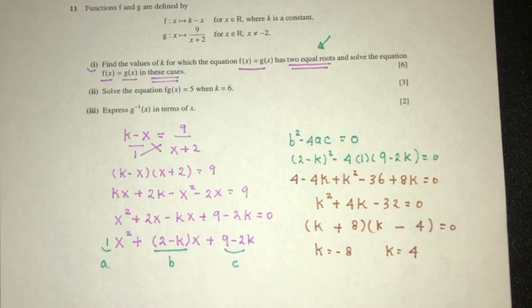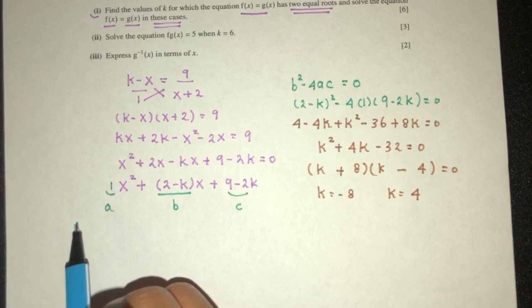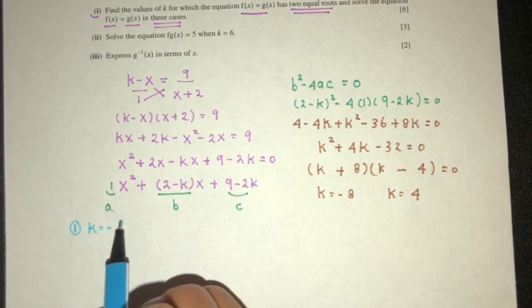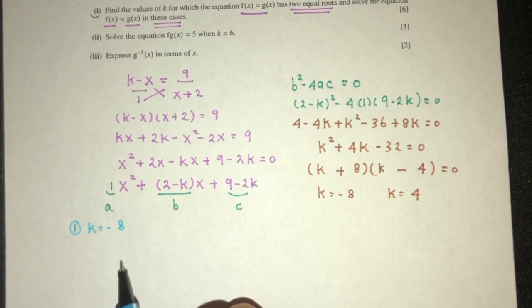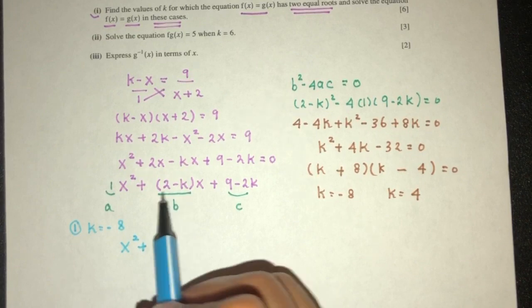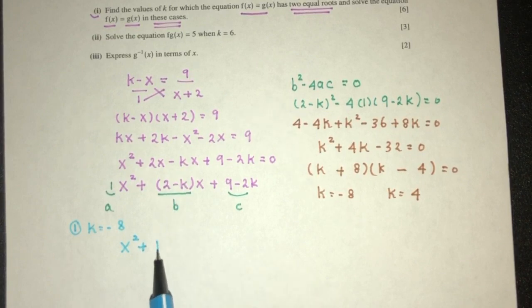So we have two values of k in this case, so we can do case number 1. k equals to -8. Our equation was solving the equation. Here we have x² + (2 - k)x. 2 - (-k) should be 10x.